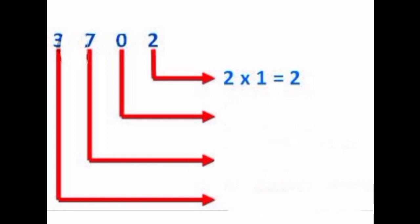To find the place value of 0 — dears, 0 is in which place? Yes, tens place. So, 0 into 10 is equal to 0. Therefore, the place value of 0 is 0.